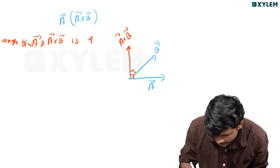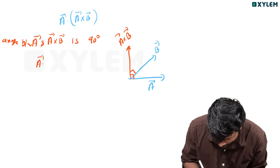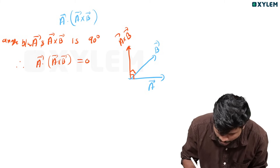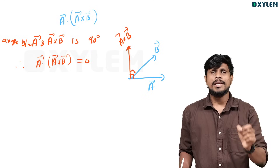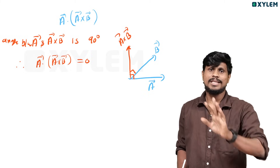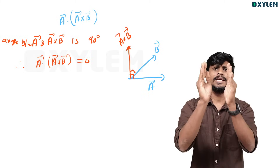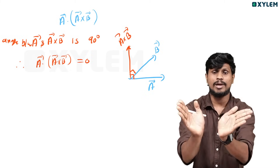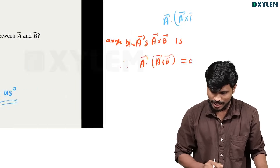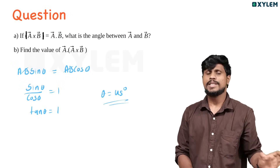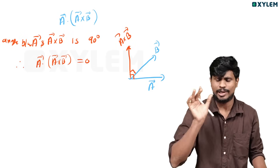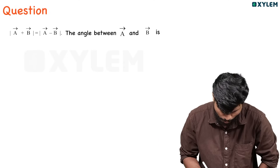The angle between A and A cross B is 90 degrees. Therefore A dot (A cross B) equals A times A cross B times cos 90 degrees. Since cos 90 is zero, A dot (A cross B) equals zero.